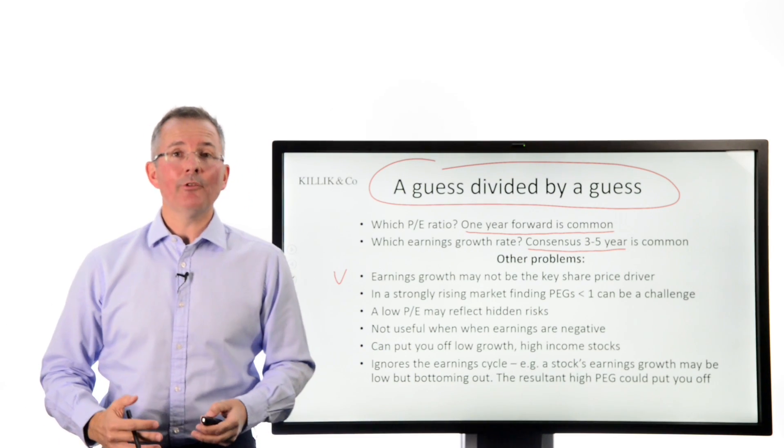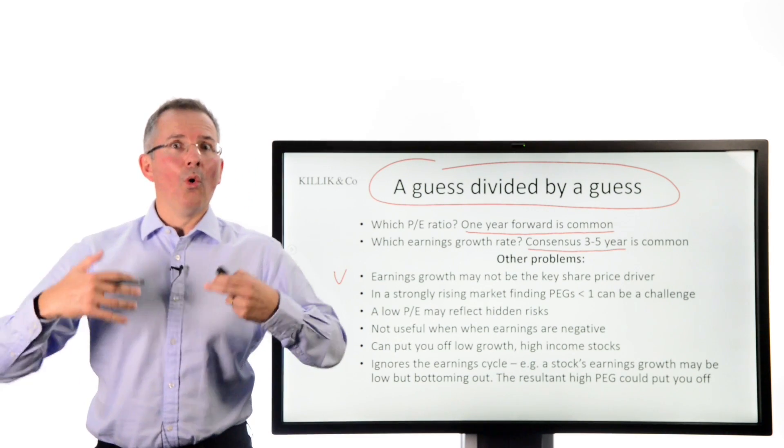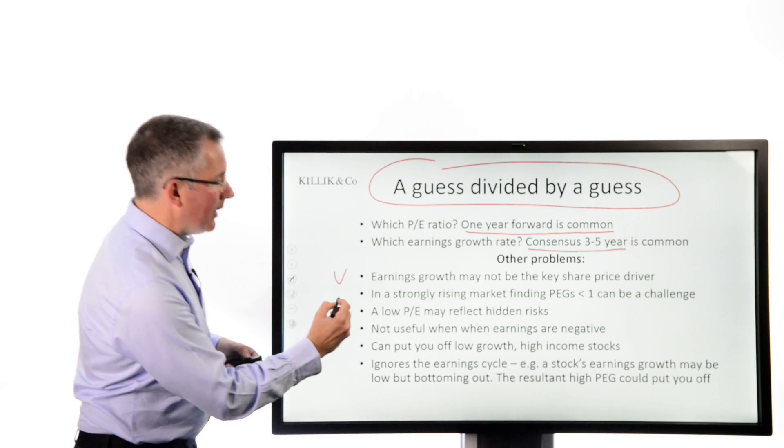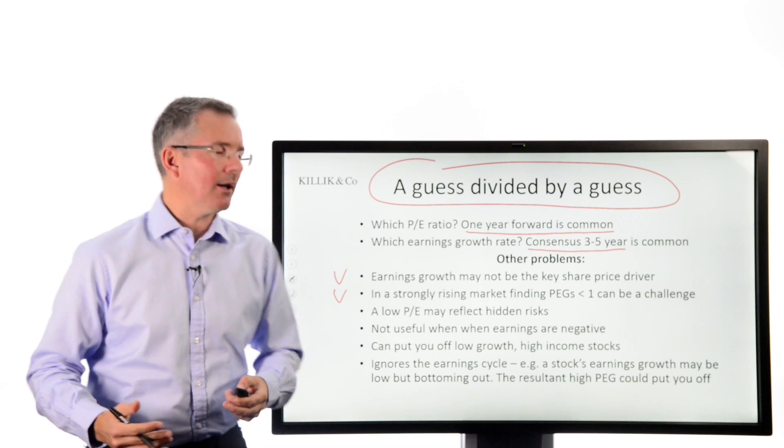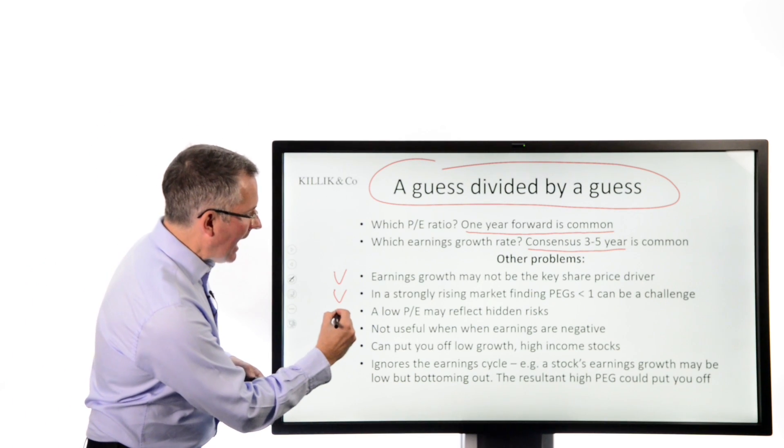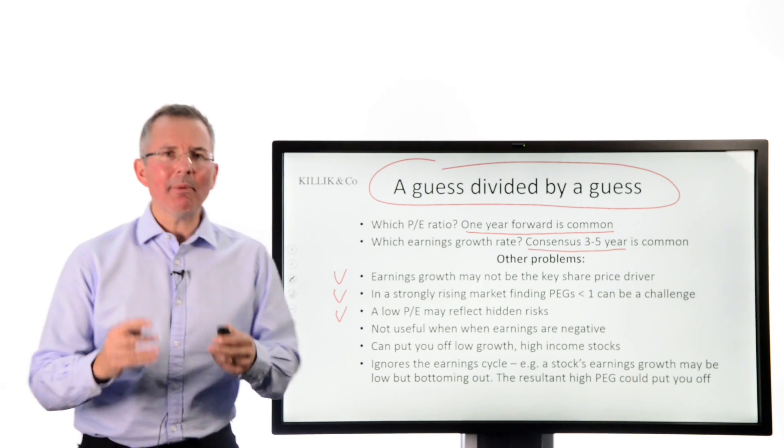In some sectors, asset value is more of a share price driver. It's not all about earnings growth. In a strongly rising market, you'll struggle to find many firms that PEG below 1, so the Cramer rule can kind of let you down sometimes. And besides, a low PE might be low for a reason.